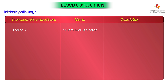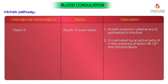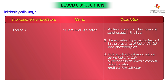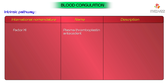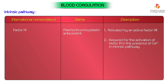Factor 10, Steward-Prower factor: it is a protein present in plasma, synthesized in the liver. It is activated by active factor 9 in the presence of factor 8, calcium, and phospholipids. Activated factor 10, along with active factor 5, calcium, and phospholipids, forms a complex called prothrombin activator, in both extrinsic as well as intrinsic pathways. Factor 11, plasma thromboplastin antecedent, is activated by active factor 12 and is required for the activation of factor 9 in the presence of calcium in the intrinsic pathway.